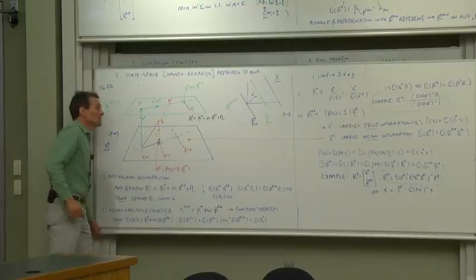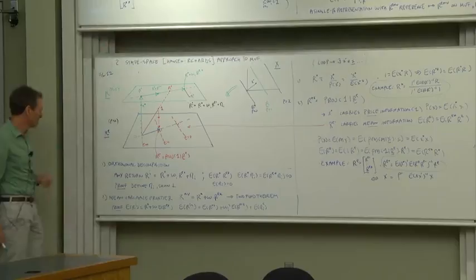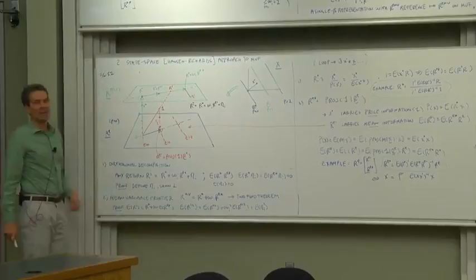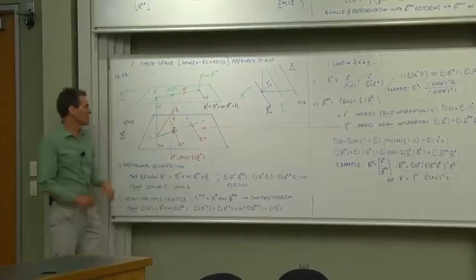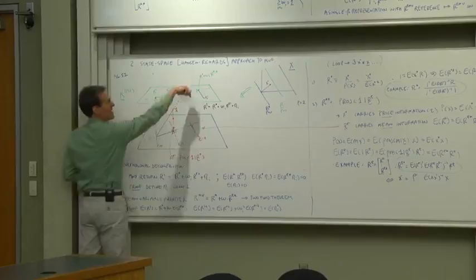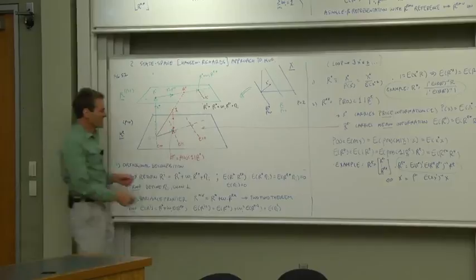Now we're ready to do our mean variance frontier with essentially no algebra whatsoever. Two propositions which you can see in the picture. First, an orthogonal decomposition. Any return can be expressed as r star plus some amount of r e star plus a residual. So r star plus we'll go in the direction r e star and then we'll go in another orthogonal direction to the residual.